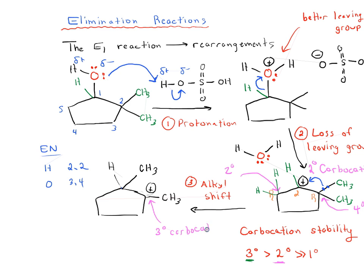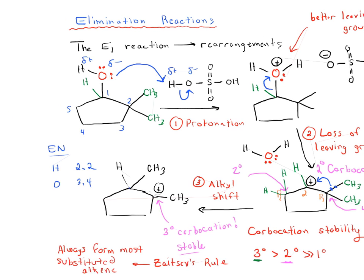This gives us a tertiary carbocation. Great! So now we said that this is an E1 reaction with a rearrangement. We're already on the rearrangement, tertiary carbocation which is stable, so now we need to do our elimination reaction. And for elimination, we remember Zaitsev's rule. Zaitsev's rule is we always form the most substituted alkene.